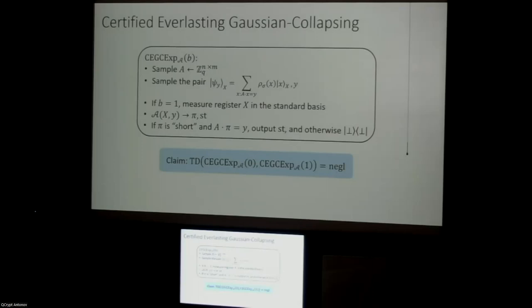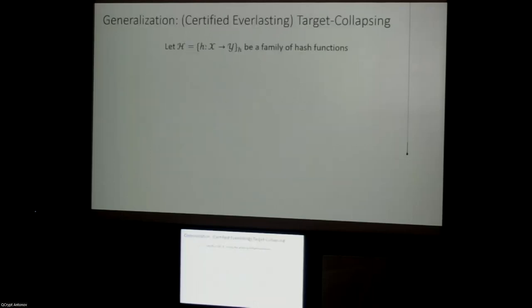This is the first main contribution of our paper — showing that certified everlasting Gaussian collapsing holds. I won't go into the proof technique here, but it builds on and extends techniques from an earlier work I have with Zhandry. Once we observed this, we asked: why just the LTI hash function? Can we generalize this technique to work for any hash function?